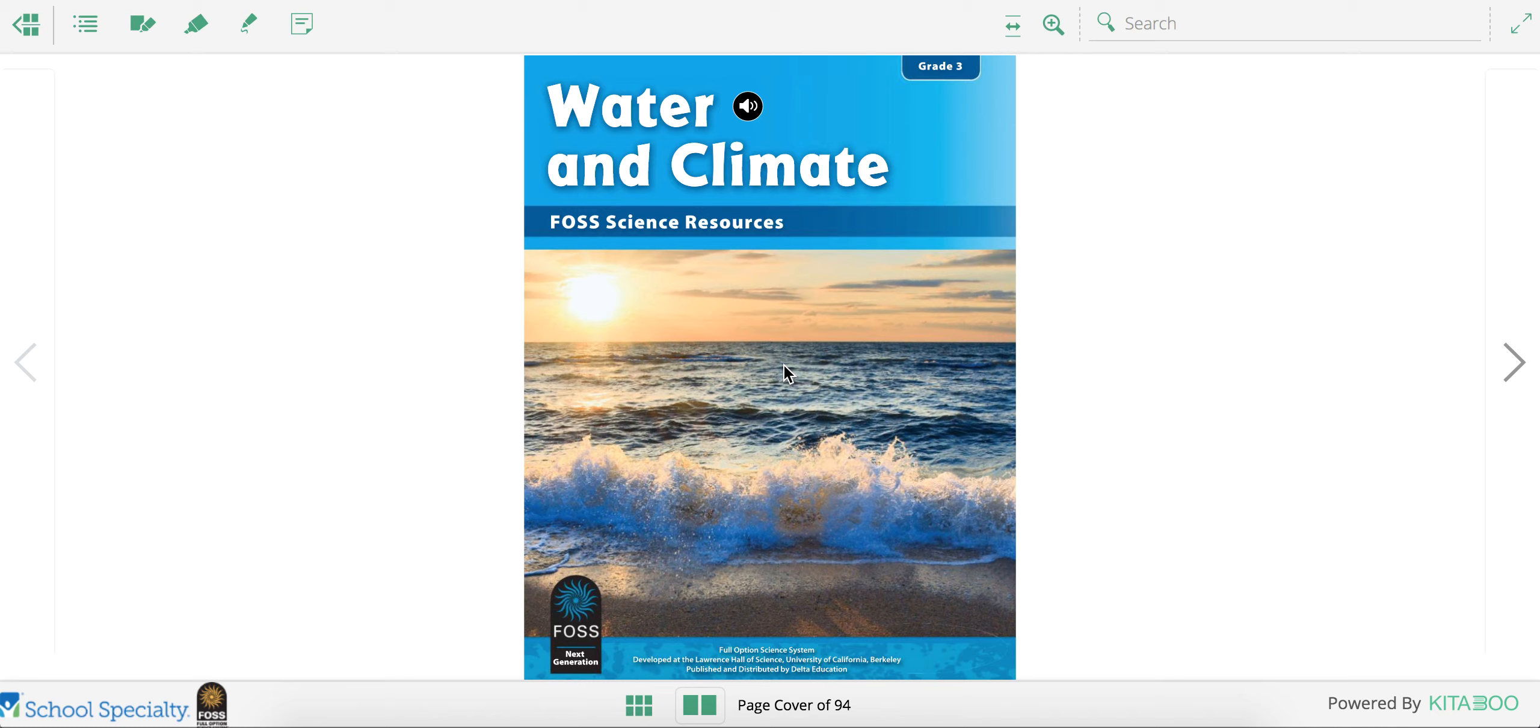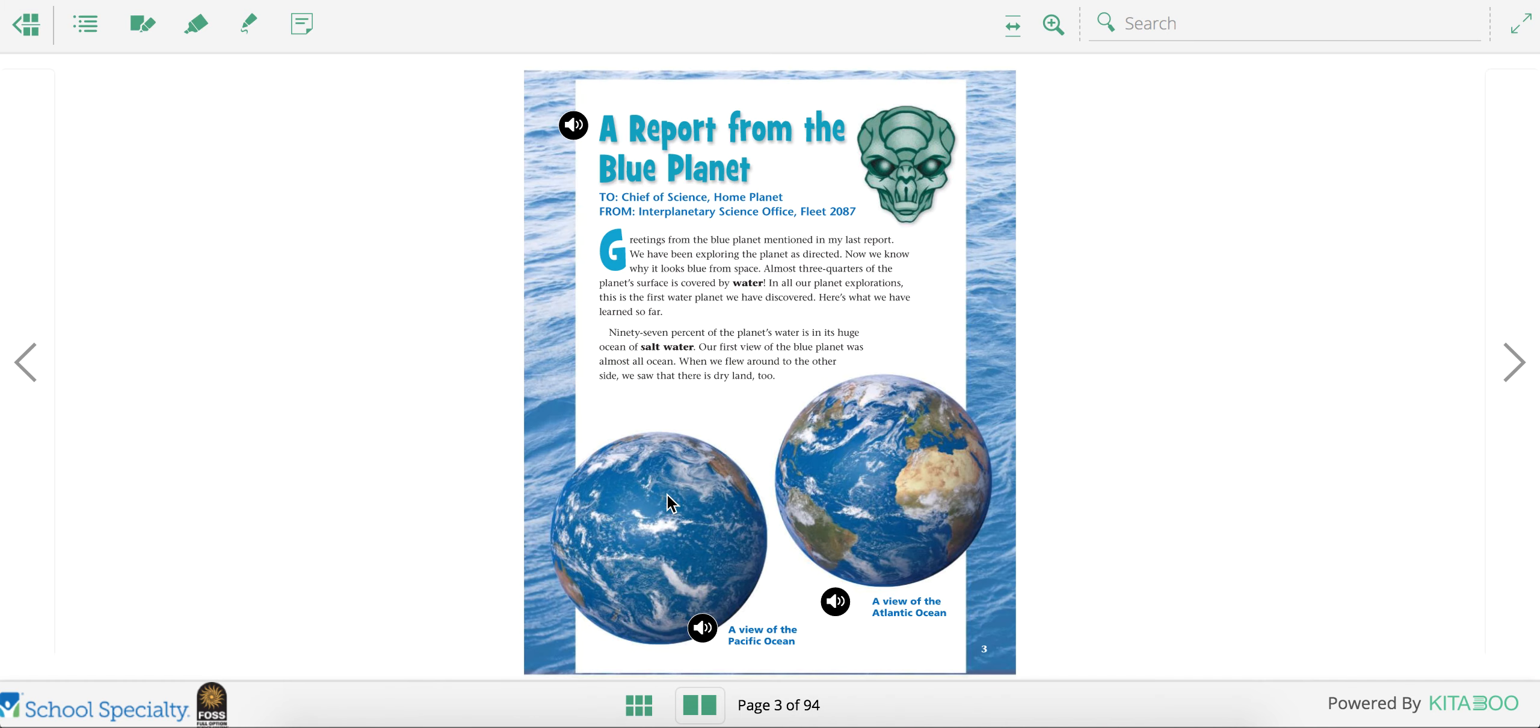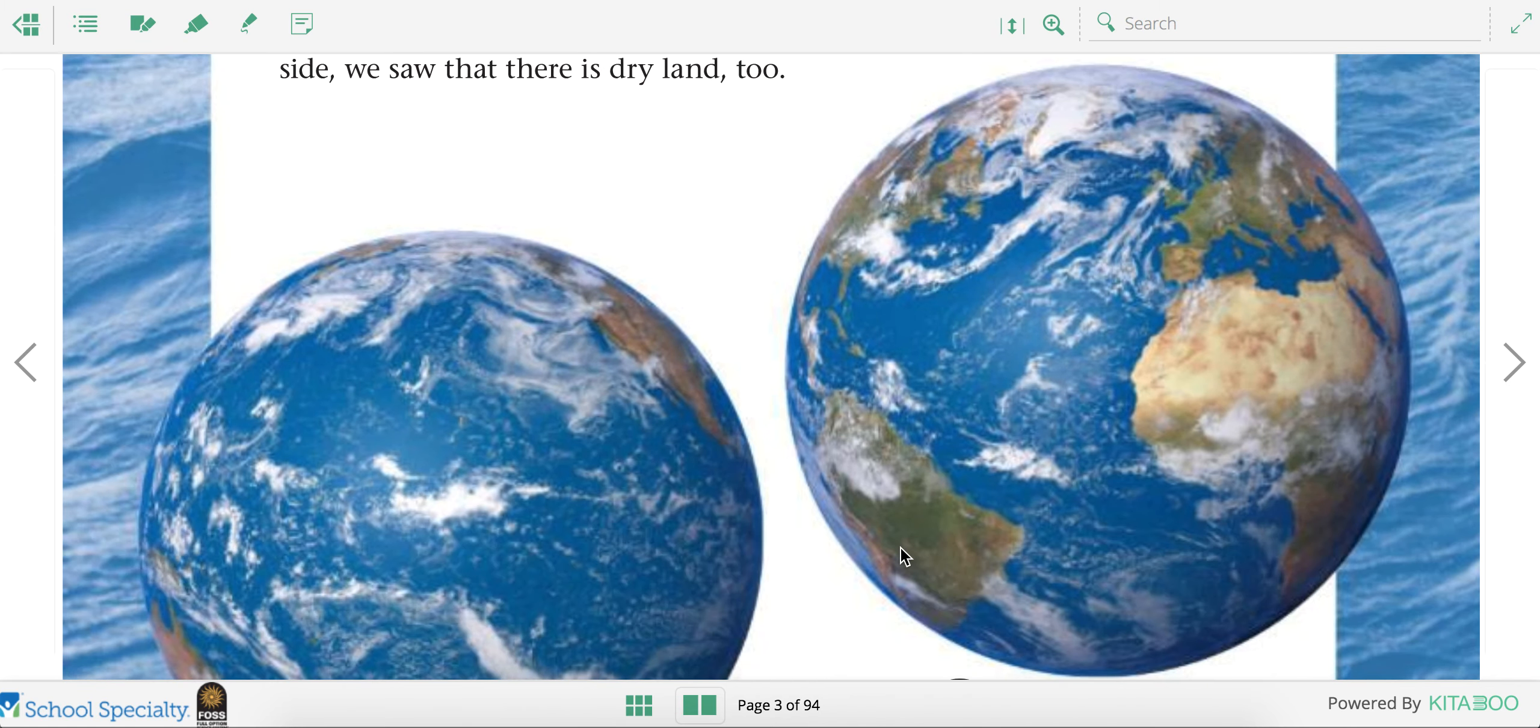Today during science we're going to start reading our Water and Climate FOSS Science textbook. I'm going to use my page finder and turn to page 3. On page 3 we're reading a fake report written by an alien, this guy.